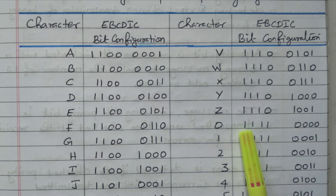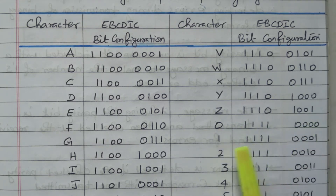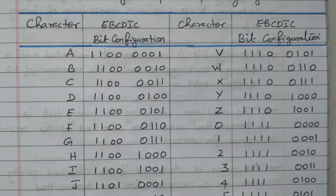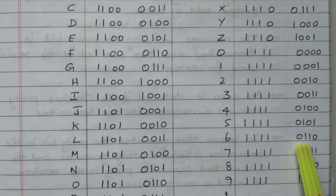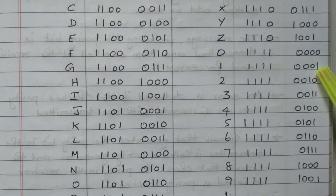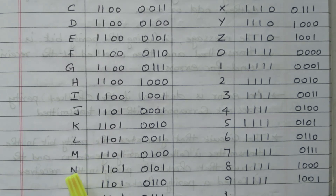For numerical digit 0, the EBCDIC code is 1111 0000; for 1 it is 0001, for 2 it is 0010, for 3 it is 0011, for 4 it is 0100, for 5 it is 0101, for 6 it is 0110, for 7 it is 0111, for 8 it is 1000, and for 9 it is 1001. The MSB for all numbers is 1111. In this tabular column, only capital letters A to Z and numerical values 0 to 9 are represented.